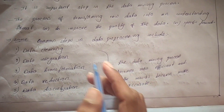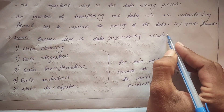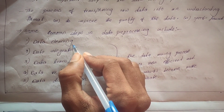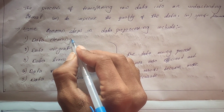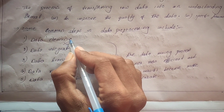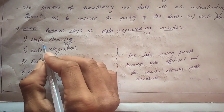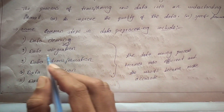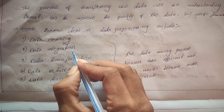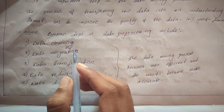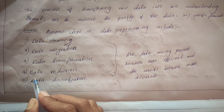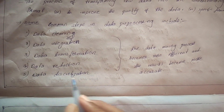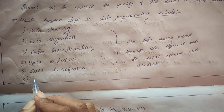Data preprocessing involves several steps. It includes data cleaning, data integration, data transformations, data reduction, data discretization, and concept hierarchy generation.